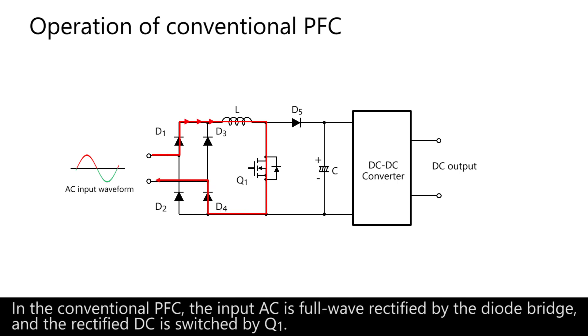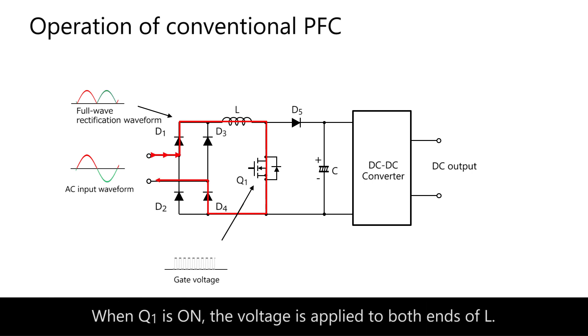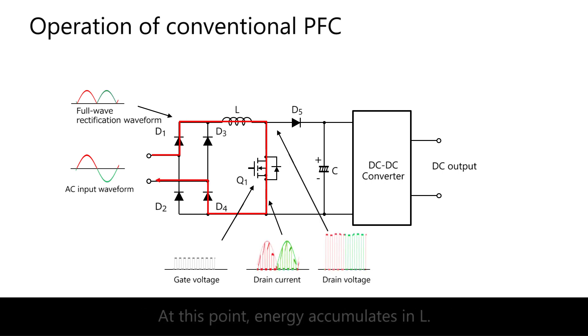In the conventional PFC, the input AC is full-wave rectified by the diode bridge, and the rectified DC is switched by Q1. When Q1 is on, the voltage is applied to both ends of L. At this point, energy accumulates in L.